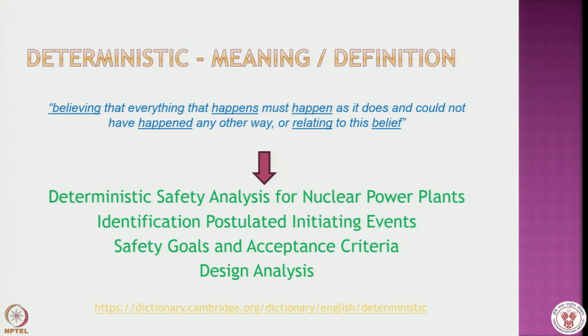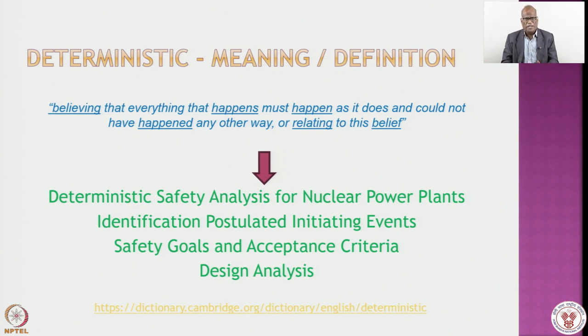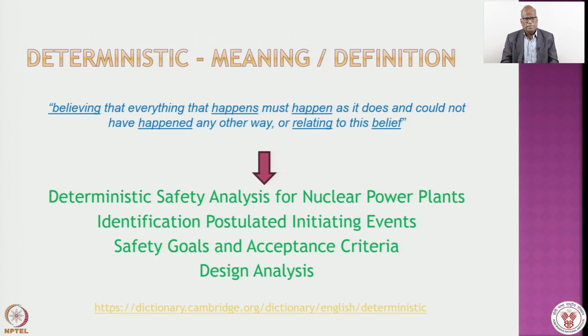We require a little bit of concept on what is deterministic and what is probabilistic. The Oxford definition of deterministic is: believing that everything that happens must happen as it does and could not have happened any other way. In simple words, if I am designing a plant, I should be able to determine what kind of redundancy we require, what kind of diversity will be required, what kind of single failure criteria will be required — such that at the end of the day, the risk component is at an acceptable level, and the plant will also operate smoothly.